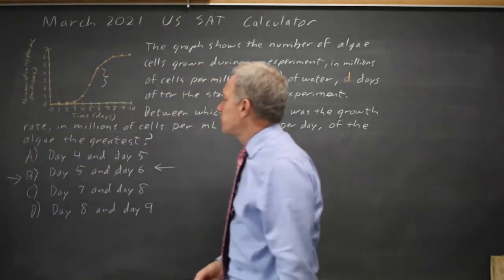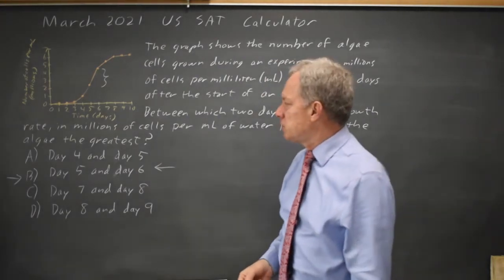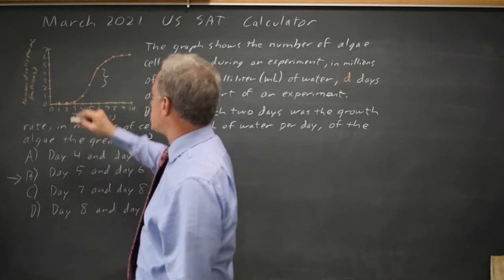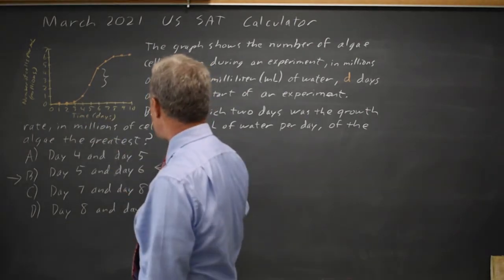Or we can figure the growth rates for each interval and choose the largest one. So day four to five is from one to perhaps 2.5 so we grew by 1.5.